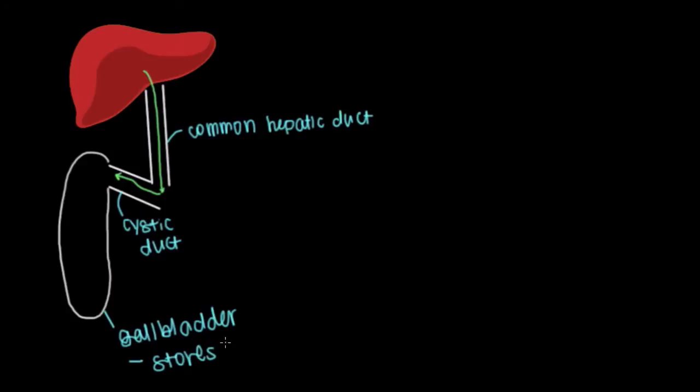This is where our bile hangs out until it's time to be released. When bile comes into our gallbladder and is just sitting there, what causes it to suddenly leave? As I'll mention in detail in a separate video, the hormone that causes bile to be released from the gallbladder is called cholecystokinin, often abbreviated CCK.